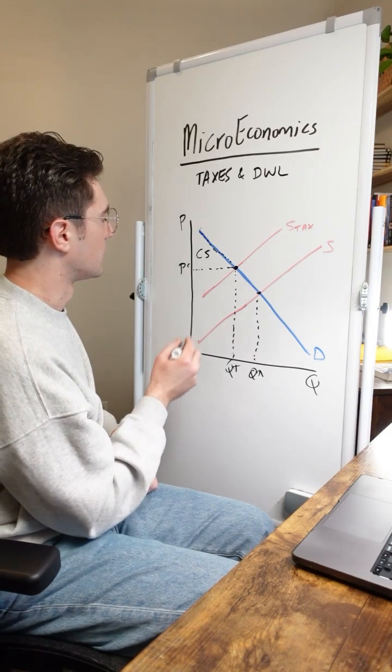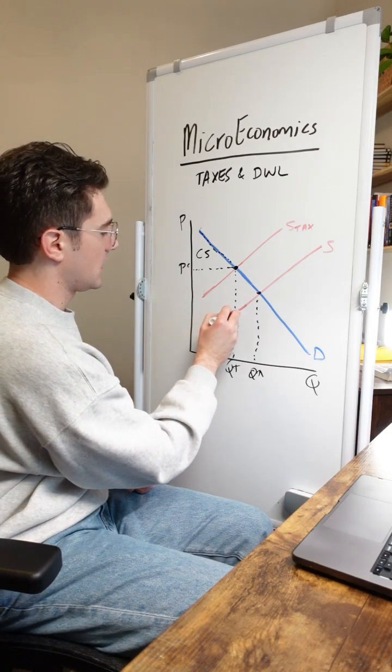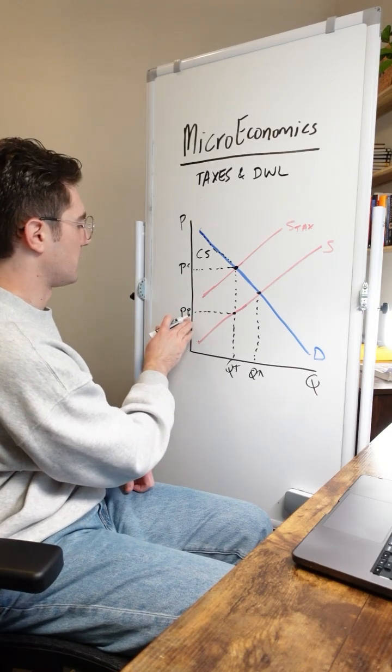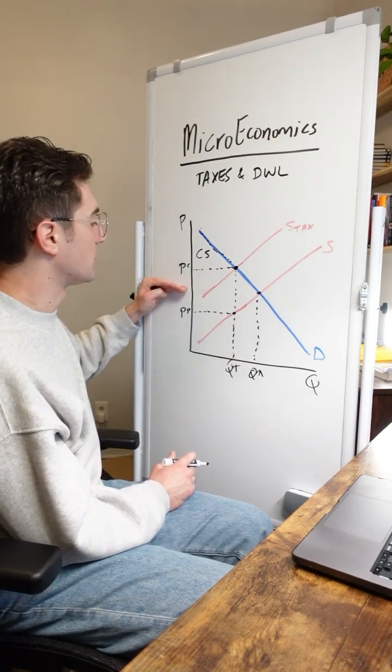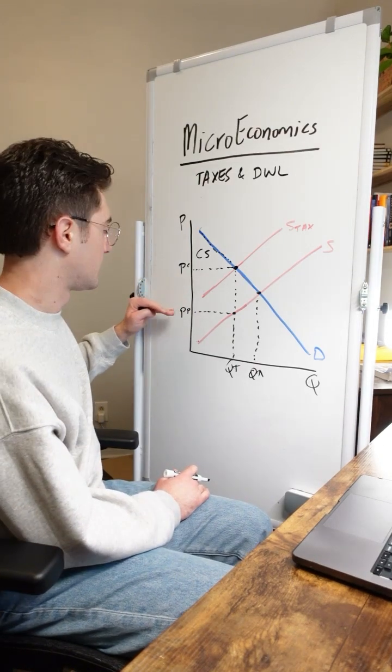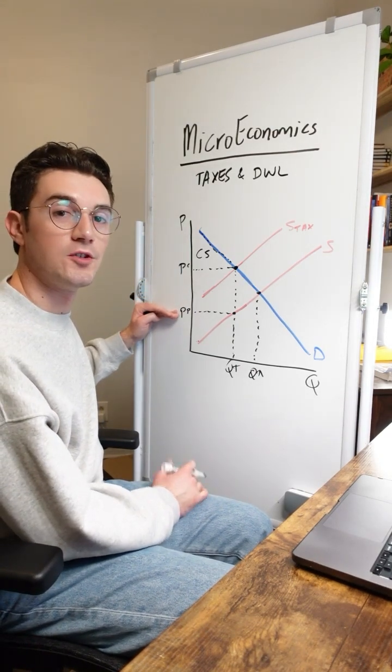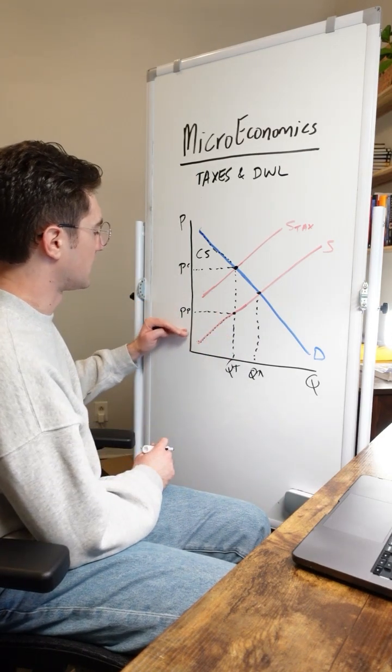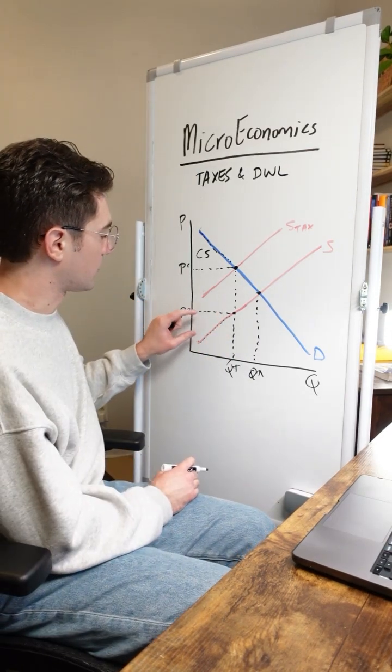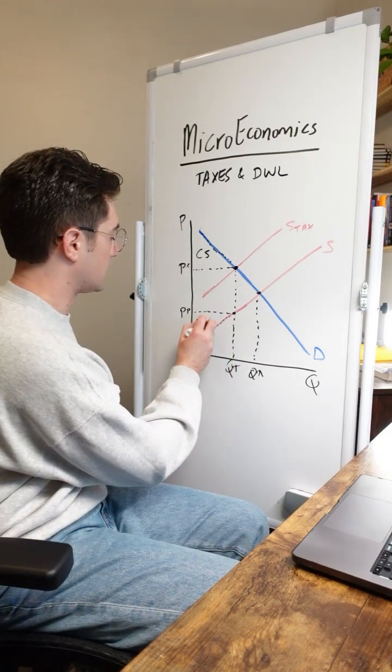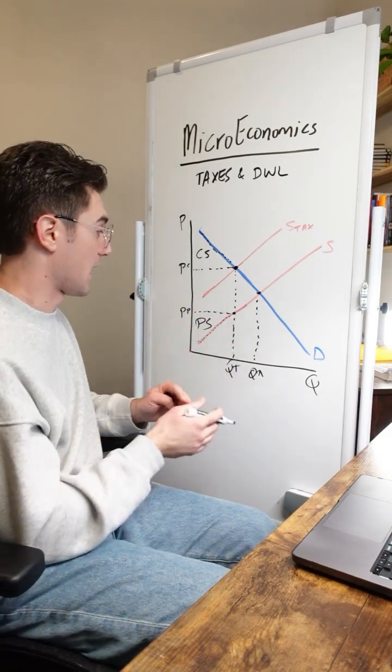Same goes for the flip with producer surplus. But what we got to understand here is that now producers are going to receive this price right here. We'll call it PP. They used to be getting paid this equilibrium price back when the tax didn't exist, but now it's cutting out some of their profits. So they're receiving this price for selling each unit of the good. And the producers along this curve right here are willing to sell it at these lower prices. So their vertical heights right here are all of their producer surpluses. And that combined together generates this triangle of total producer surplus with the tax.